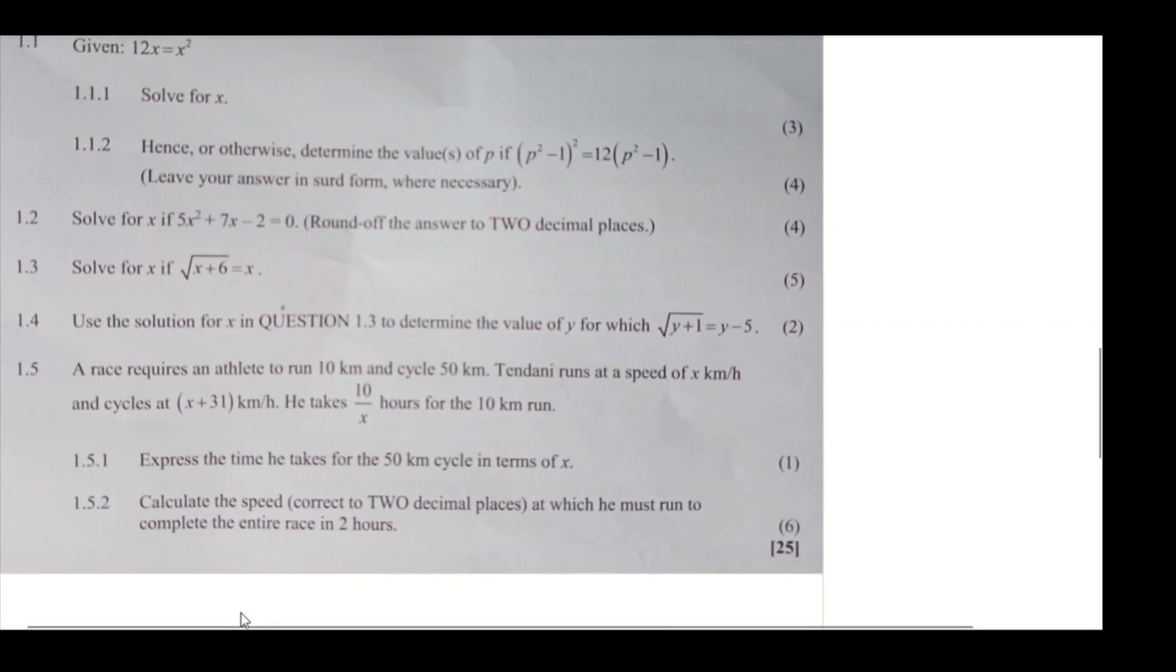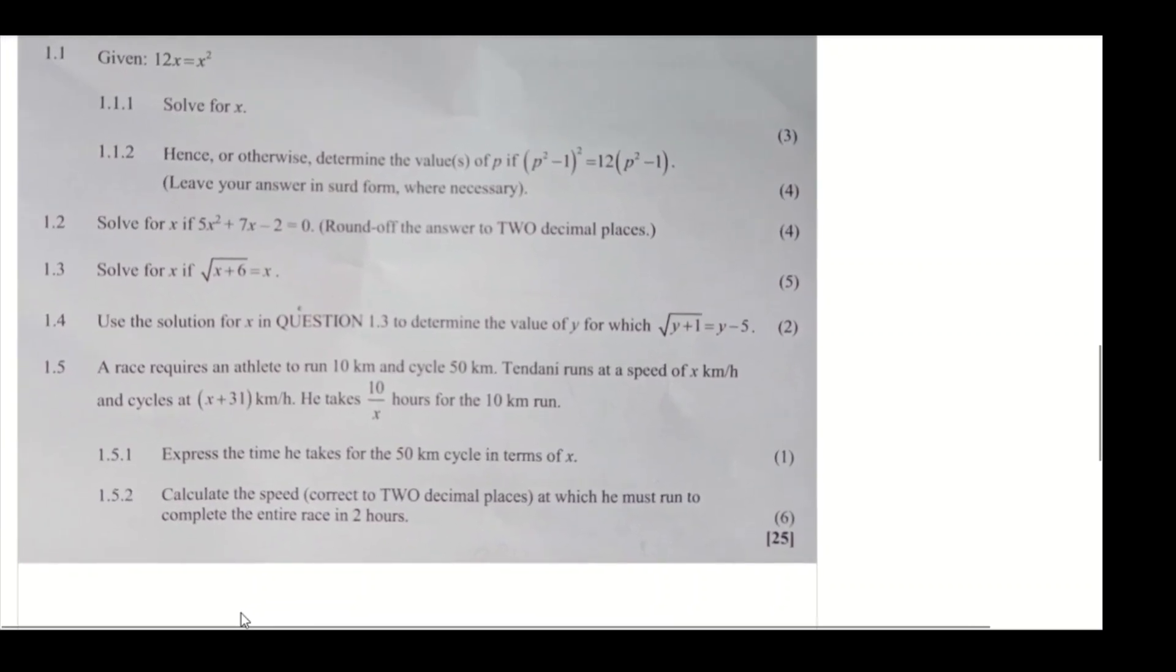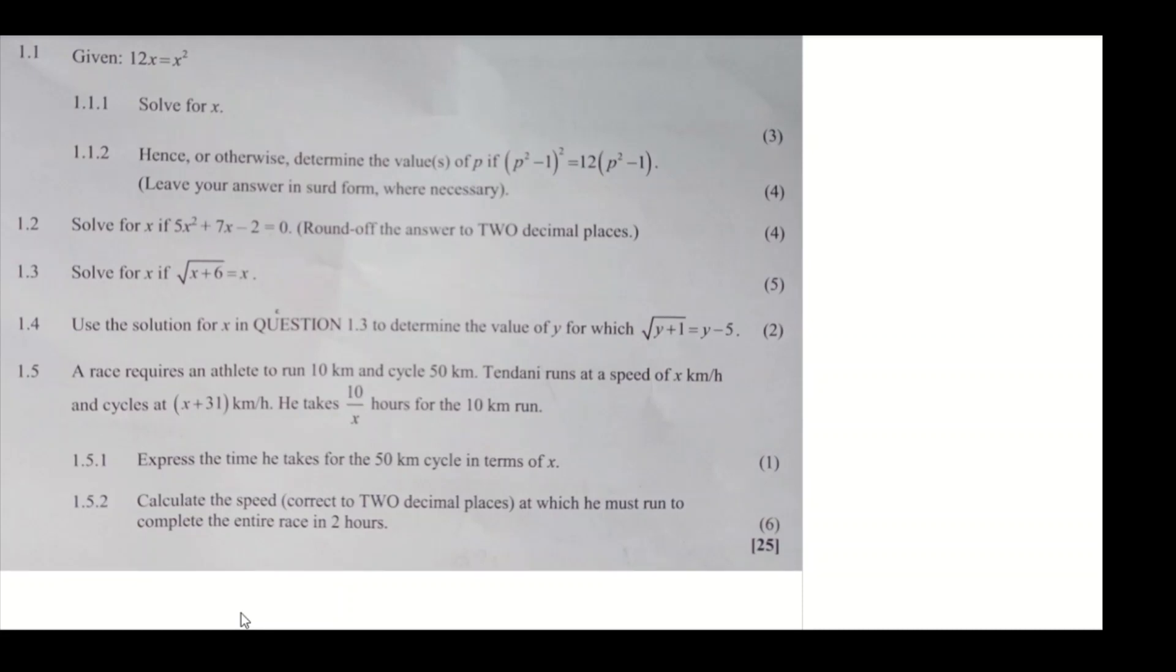It's question 1.5. The question reads: A race requires an athlete to run 10 kilometers and cycle 50 kilometers. Tendani runs at a speed of x kilometers per hour and cycles at a speed of x plus 31 kilometers per hour. He takes 10 over x hours for the 10 kilometer run.